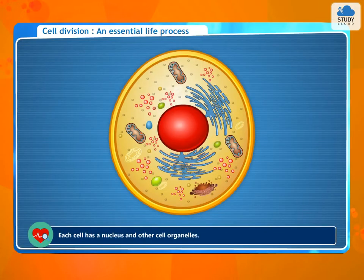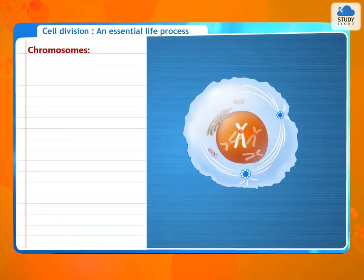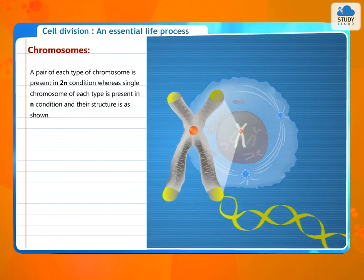Each cell has a nucleus and other cell organelles. Before cell division, the cell doubles up its chromosome number present in its nucleus. That is, if the chromosome number is 2N, it is doubled up to 4N. A pair of each type of chromosome is present in the 2N condition, where a single chromosome of each type is present in the N condition, and their structure is as shown.